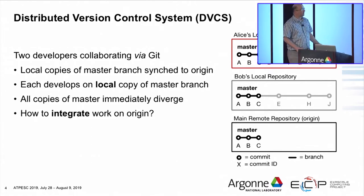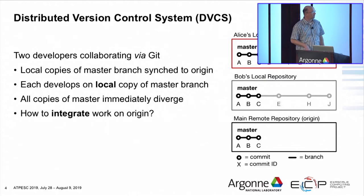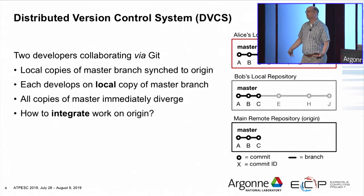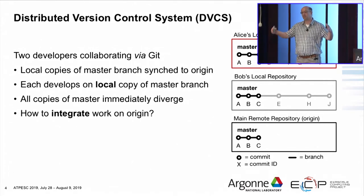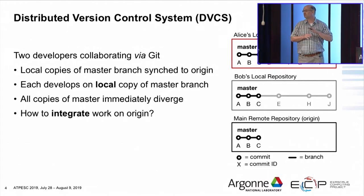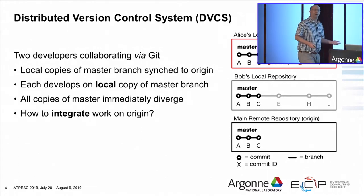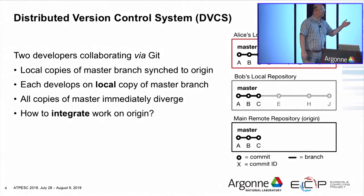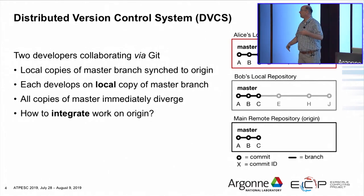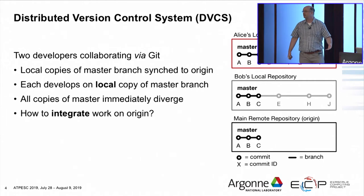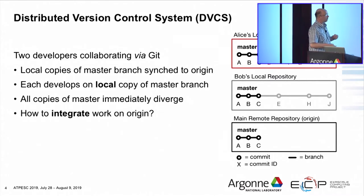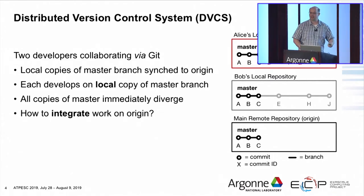Bob and Alice are both eager and immediately start doing work. Bob does work in the form of commits E, H, and J. Alice does work in the form of commits D, F, G, and I. They're both being productive, each working within their local repository. But that's not the point of their collaboration — they need to actually take that code and share it. Alice sees what she's doing but not what Bob's doing and vice versa. They need to push that work from their local repositories to the remote repository, which is where they're going to have to integrate their work.